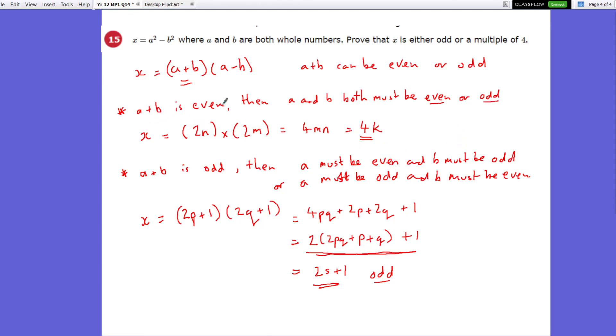In this first scenario, when a plus b is even, x is a multiple of 4. I'll just put that there, x is a multiple of 4. Or when a plus b is odd, then x is an odd number.